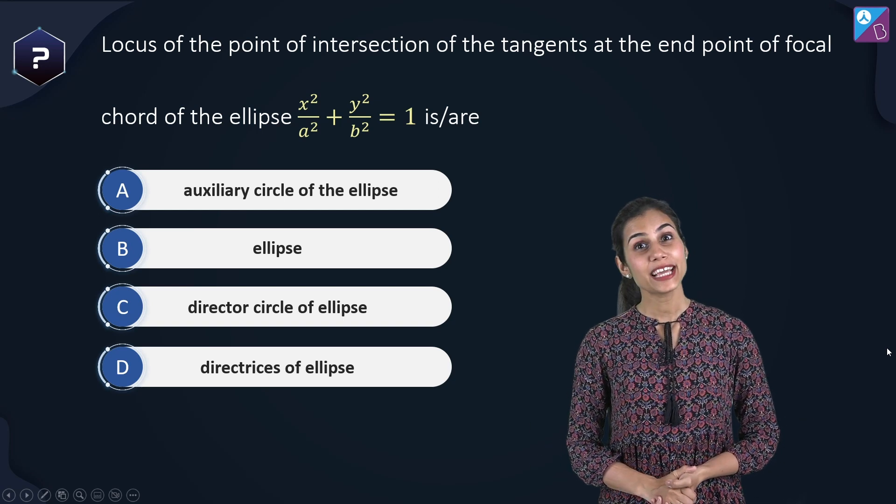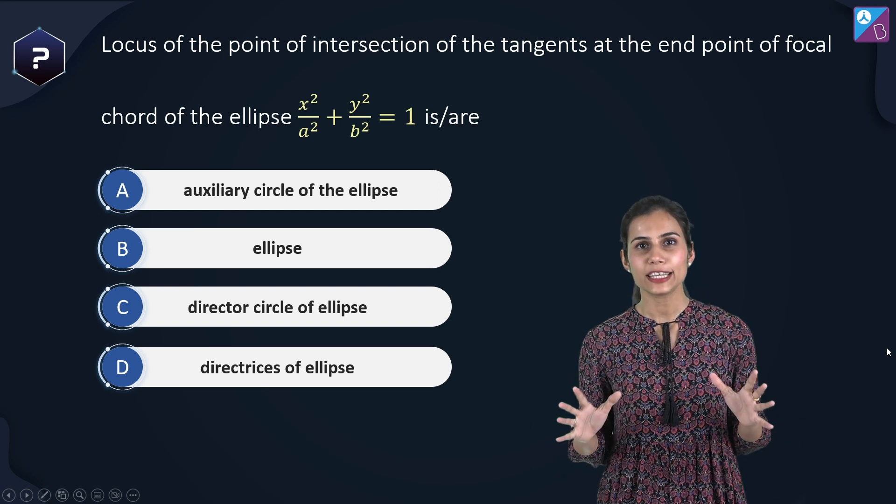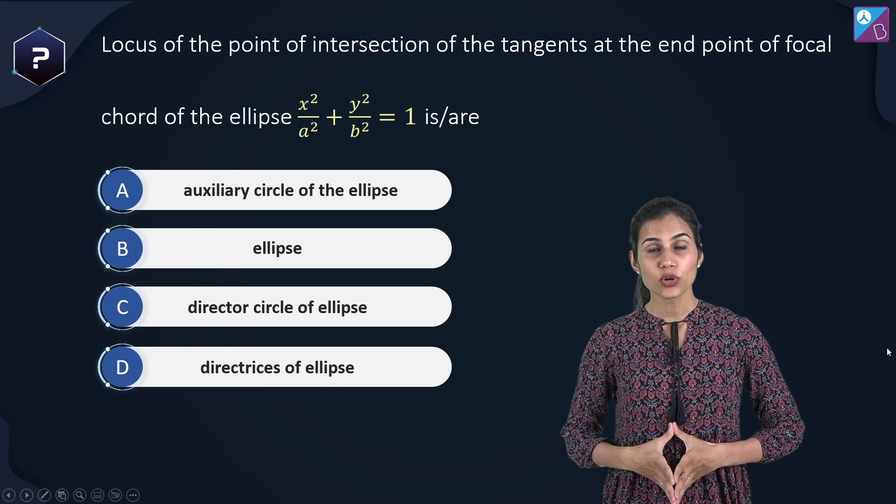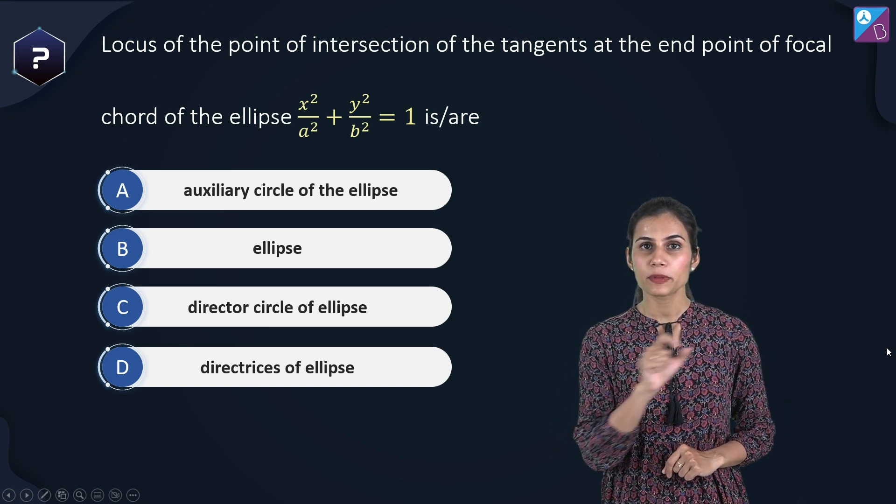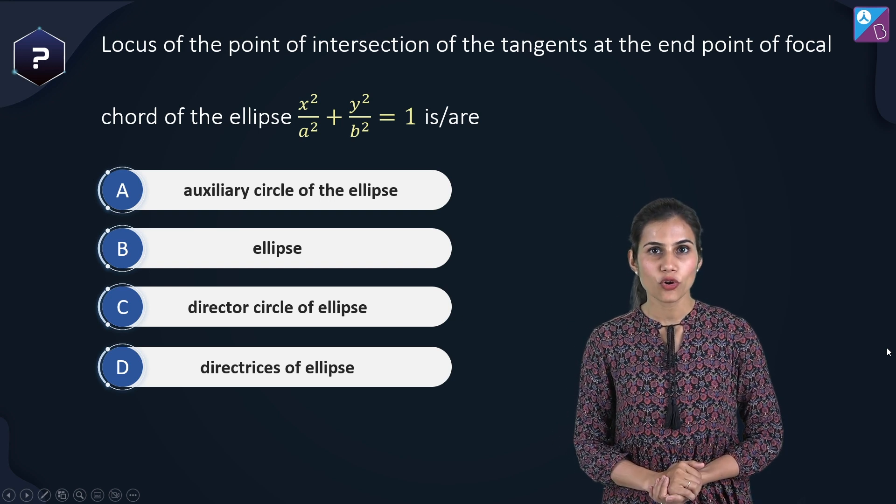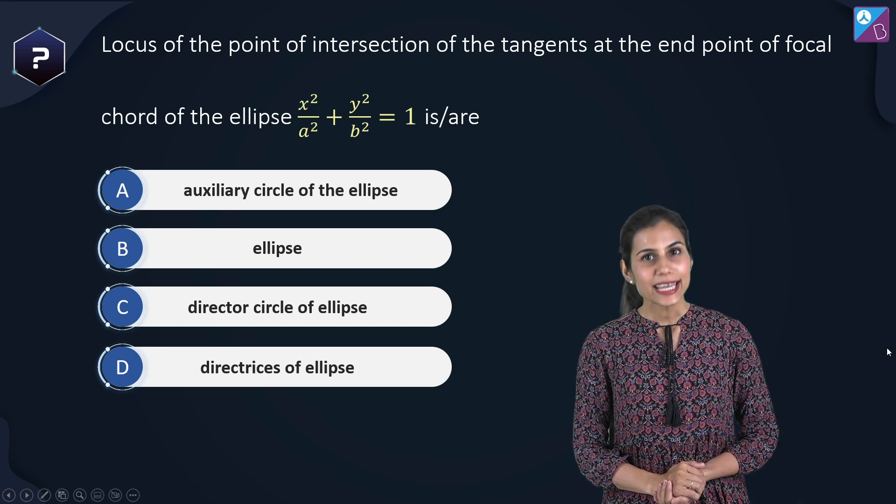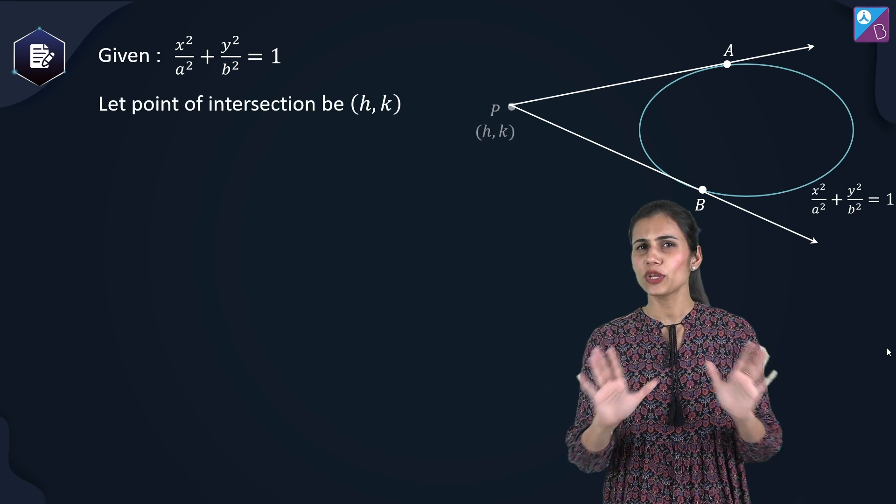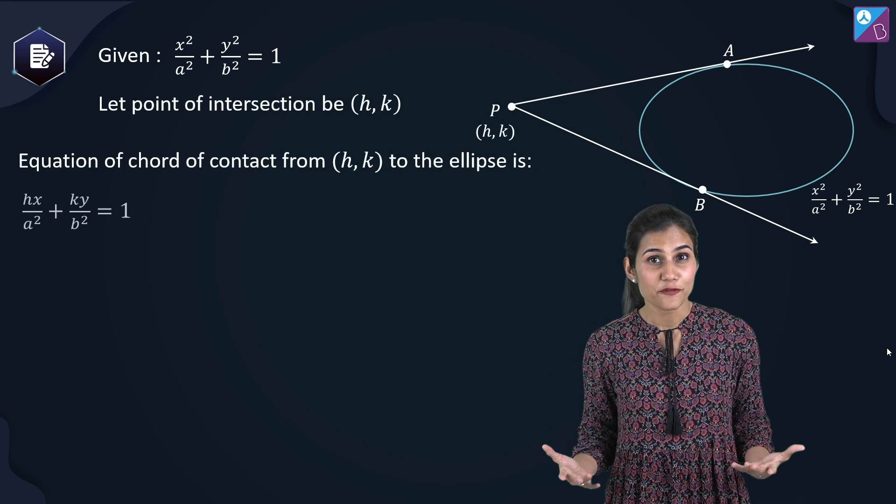Hi there people. Today I am here to share with you something really fascinating. Take a look at this question. It says find the locus of the point of intersection of the pair of tangents drawn at the extremities of the focal chord of the given ellipse. Let's first discuss the usual mechanical solution that we all are familiar and comfortable with.